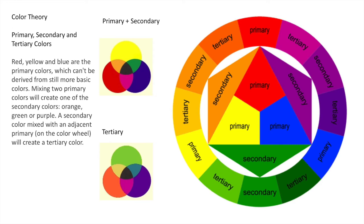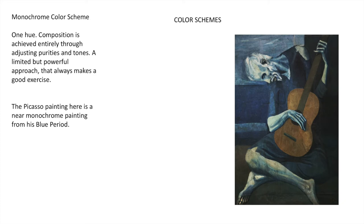For example, a monochromatic color scheme uses one hue. This painting by Picasso is not a true monochromatic — it has more than one hue — but it's mostly monochromatic. It's a limited approach, but it can be powerful, with variations of dark blue, light blue, and so on.